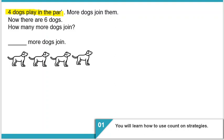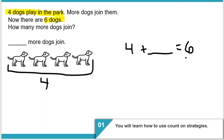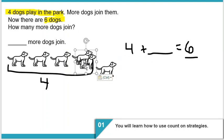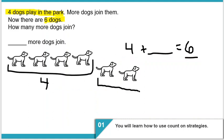Here we have four dogs playing in the park. More dogs join them — just like the last problem — for a total of six dogs. So we have four plus blank equals six. Here are our four dogs, and we're going to count on to six: five, six. So we have this next group of one, two dogs. Four plus two equals six.